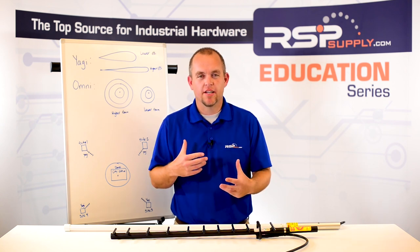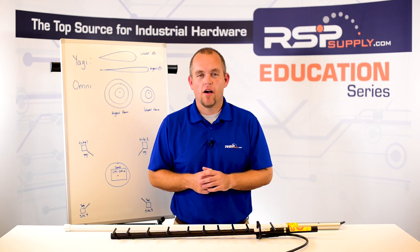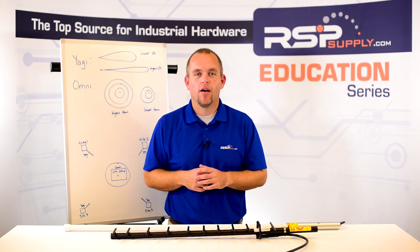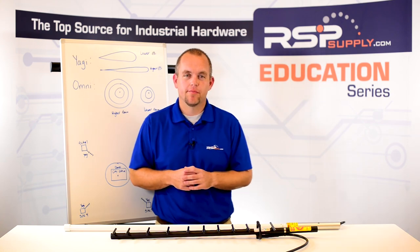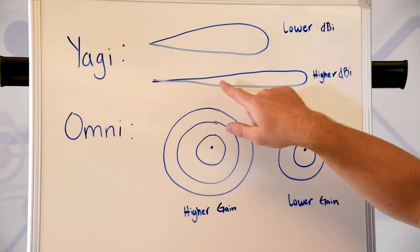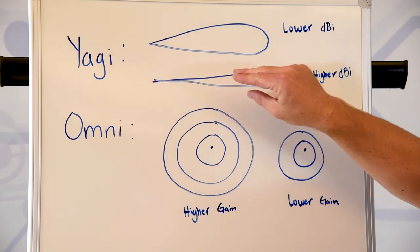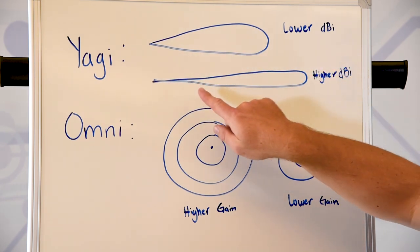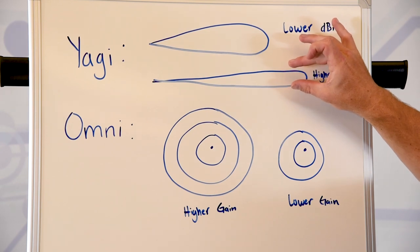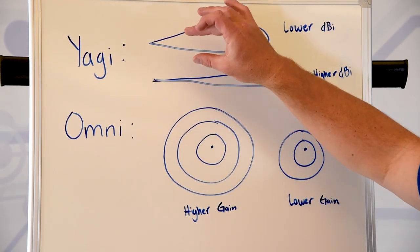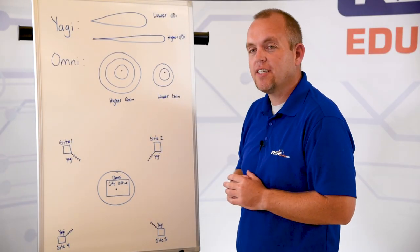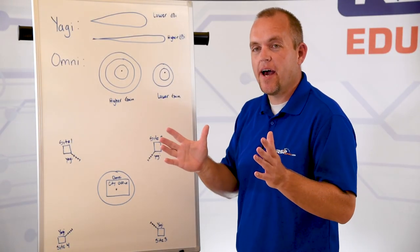Another thing we might want to consider is the dB rating of our antenna. What dB affects is the signal strength of our given antenna. In regards to a Yagi antenna, the higher dB rating we have increases the distance in which it can communicate; however, it does narrow our antenna pattern. The lower dB rating with the Yagi antenna reduces our communication distance, but increases our antenna pattern.